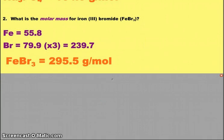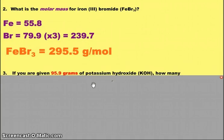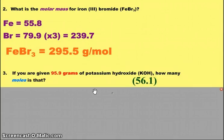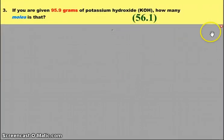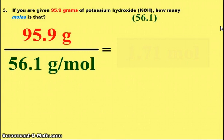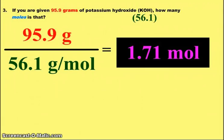All right. Question three says, if you were given 95.9 grams of potassium hydroxide (KOH), how many moles is that? And again, my little hint to you, if I give you the formula, you're going to use the periodic table. K is 39.1. O is 16. H is 1. Add it up, we get 56.1. So we've got 95.9 grams divided by 56.1, the molar mass from the periodic table. That is how we get the 1.71 moles of potassium hydroxide.